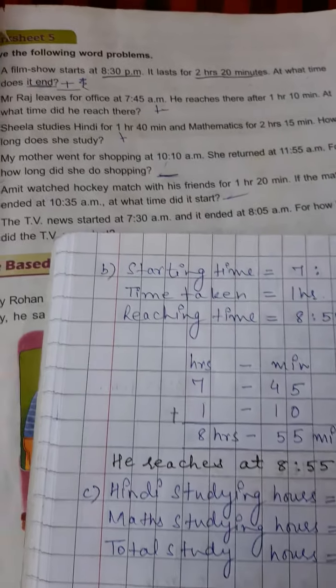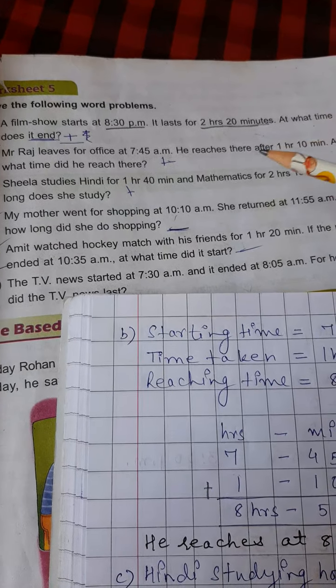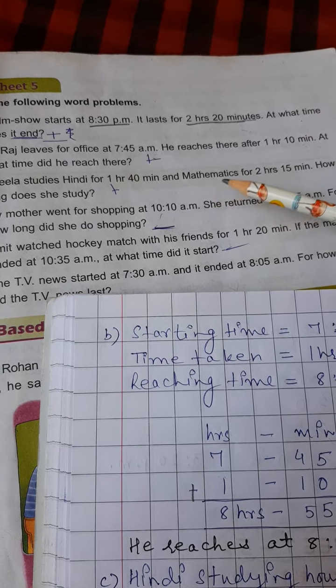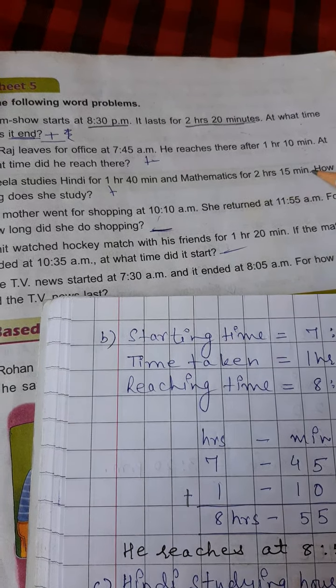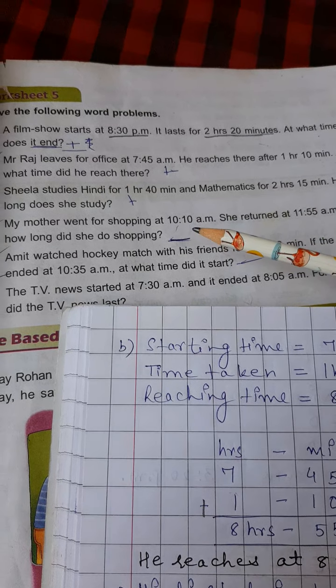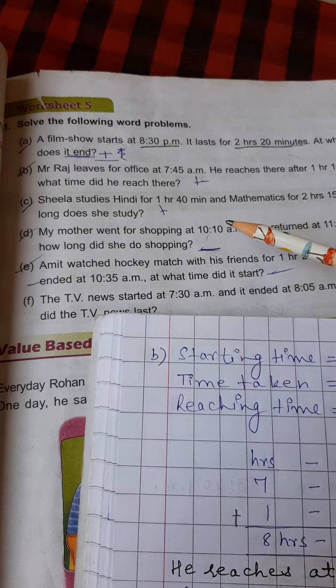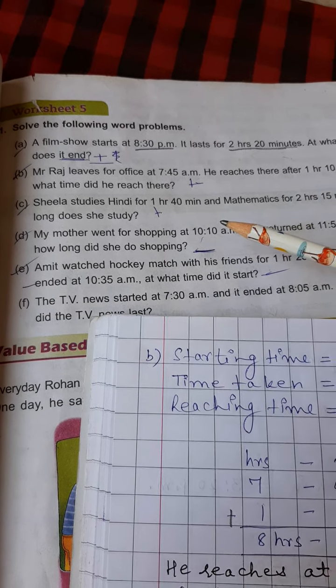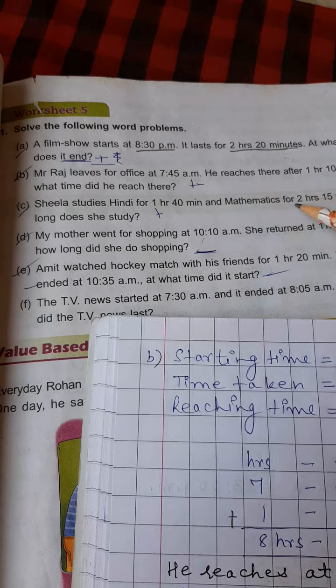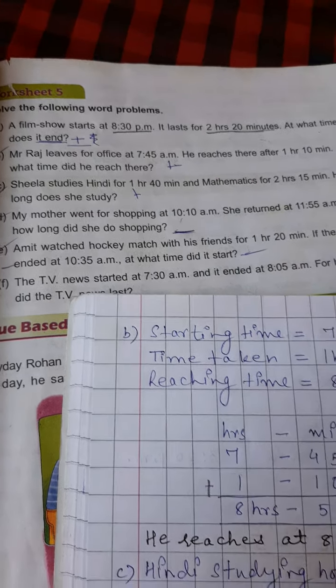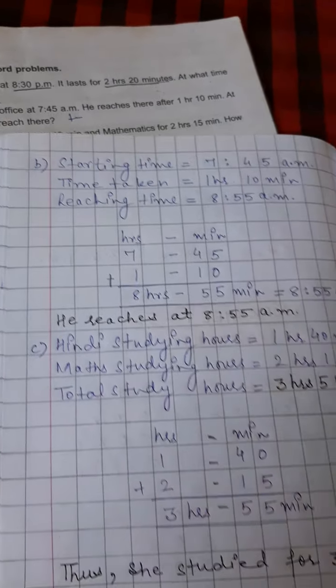Now the C part is, Sheila studies Hindi for 1 hour, 40 minutes and mathematics for 2 hours, 15 minutes. How long does she study? Now students, here in this question, we have to find out the study hours. So we have to add these both. So how are we going to write it in statements?